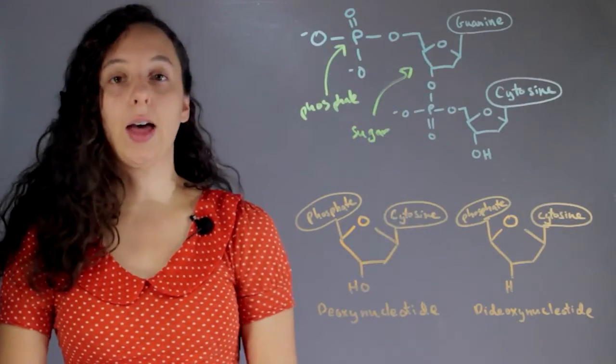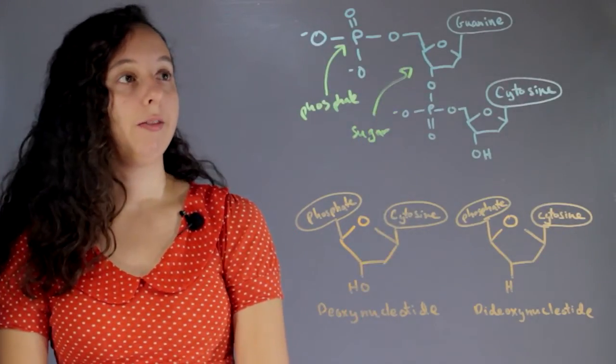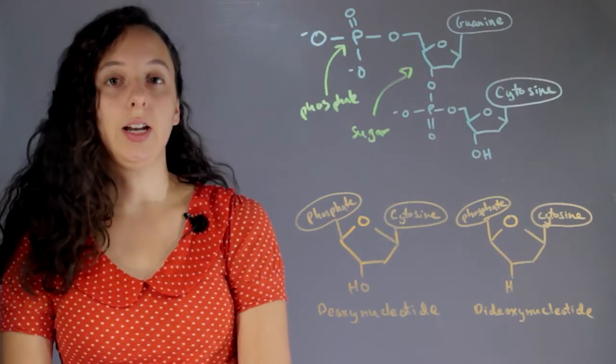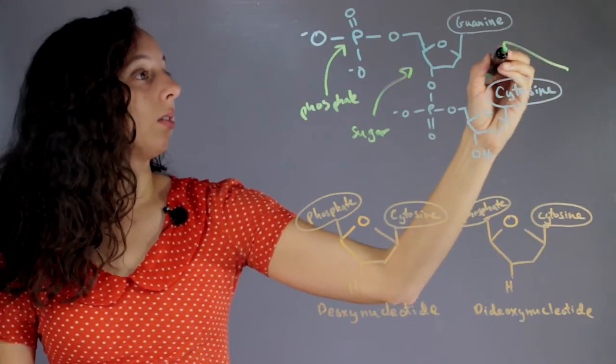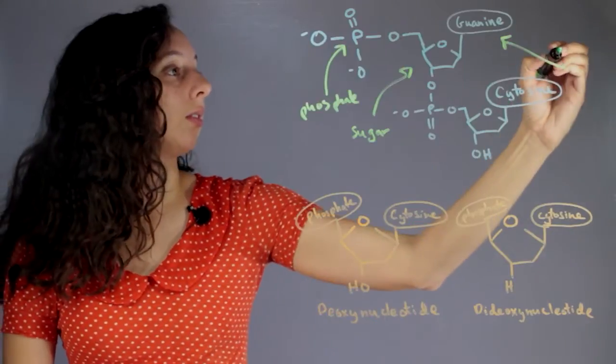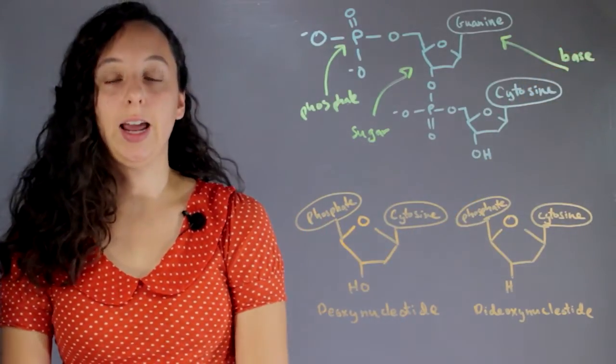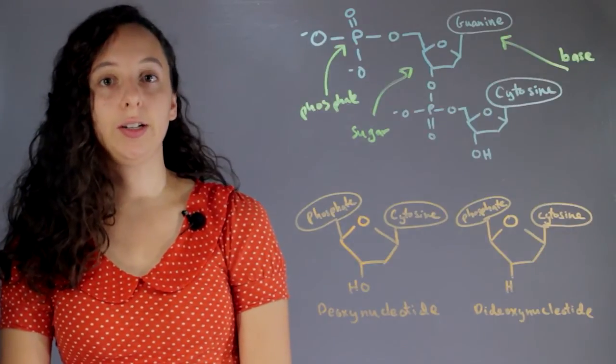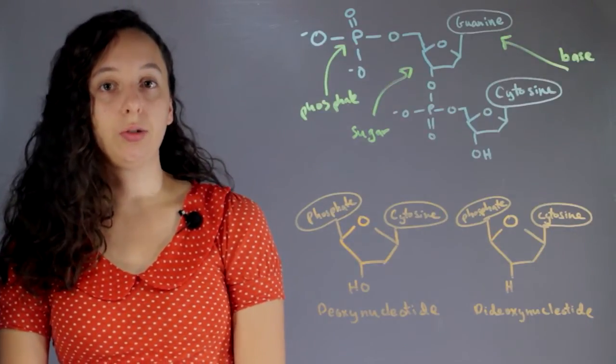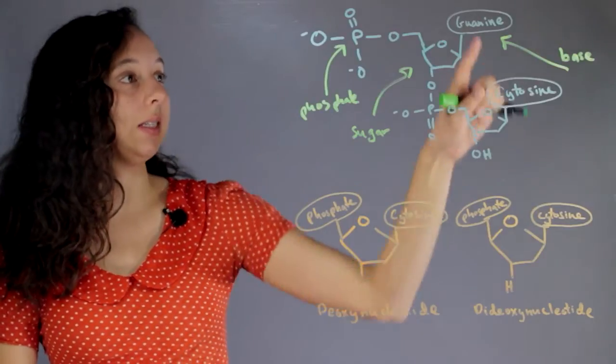The last part of each unit of a DNA backbone is our base. DNA is normally two-stranded and gets its two-strandedness from hydrogen bonds between the bases.